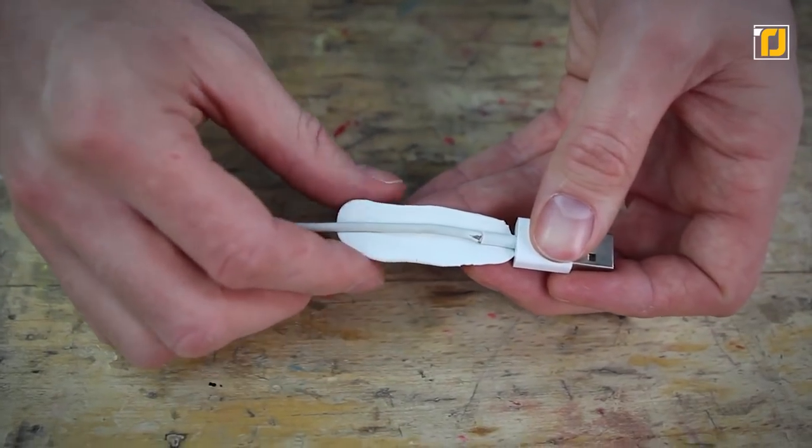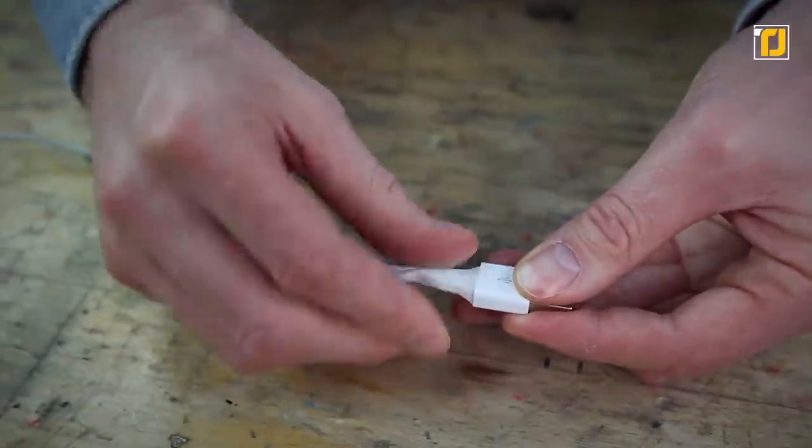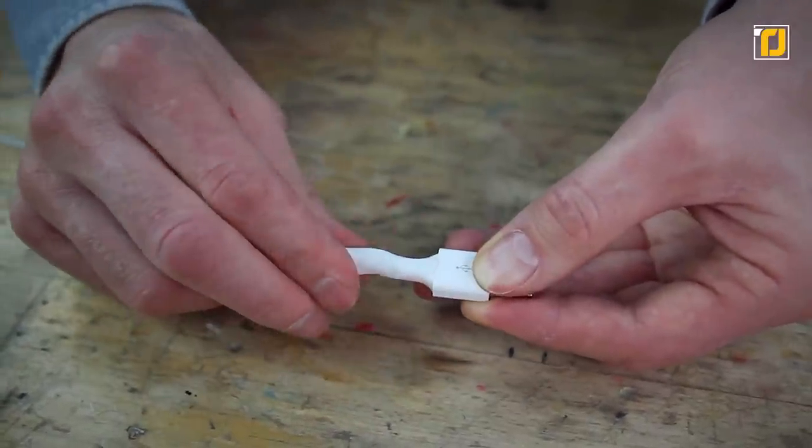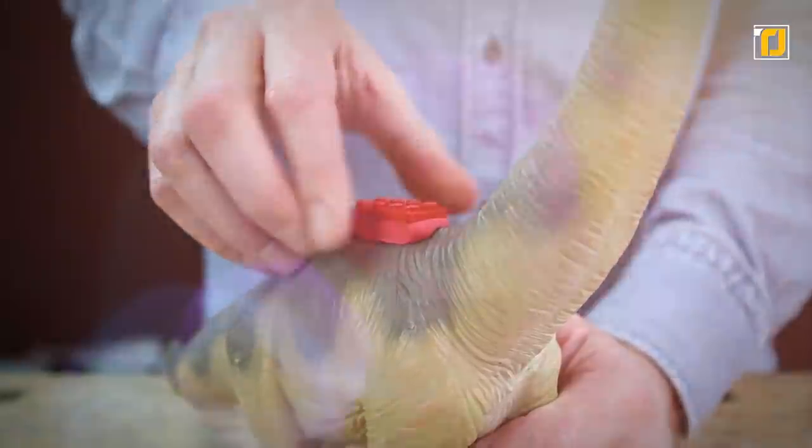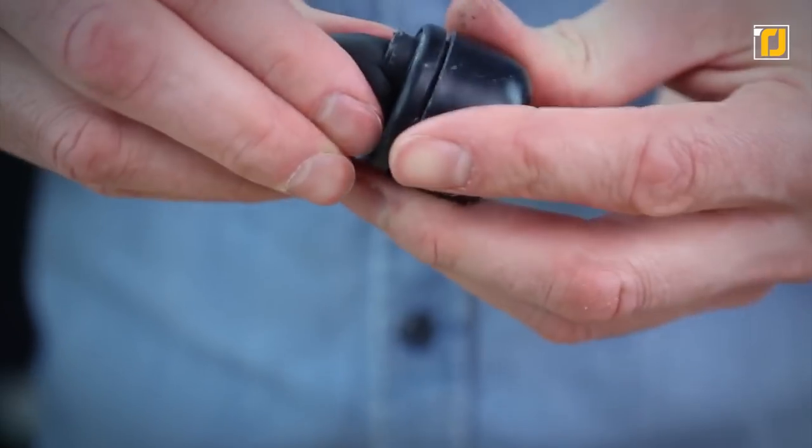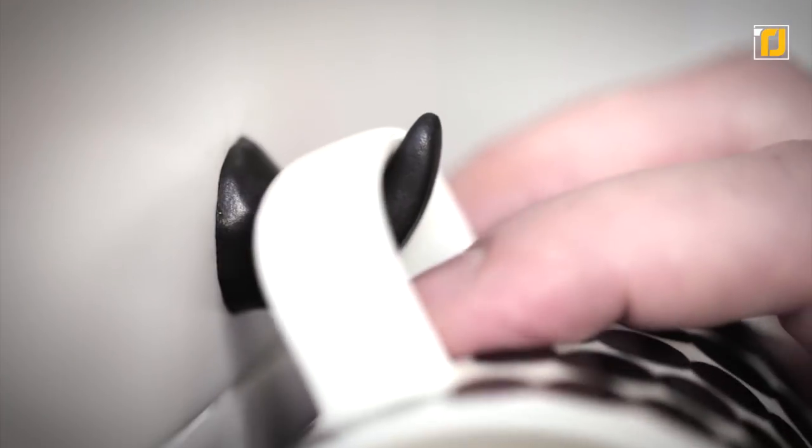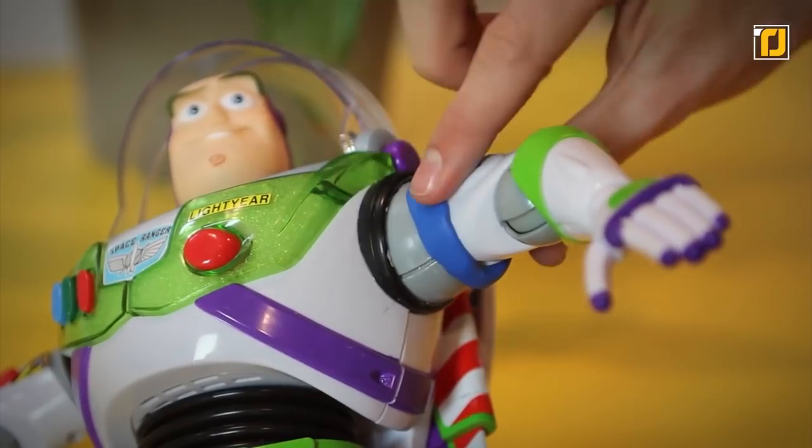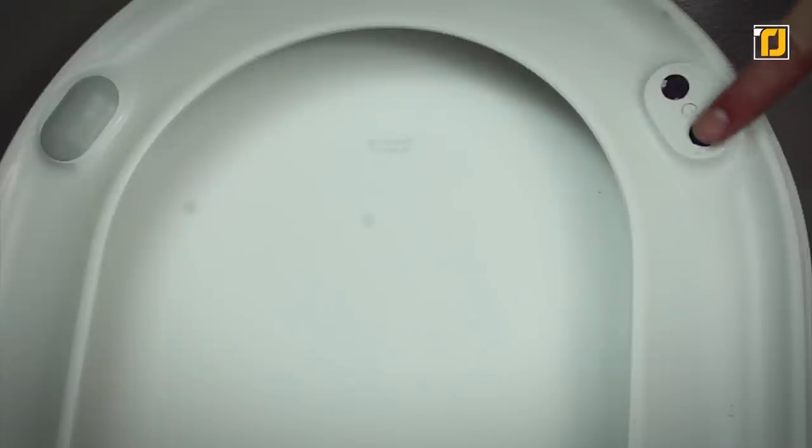The next time you break your charger, just use a piece of Sugru and mold it to fix it. You have about 30 minutes to mold it, and after 12 to 24 hours, it turns into strong and durable silicone rubber. The best part is that it comes in an array of colors that you can mix and blend to create new shades. Make a zipper out of it, heat-proof your mugs, mold a hook, baby-proof any corners, and even make little crafts with it. The possibilities are endless, and all you have to do is get creative.